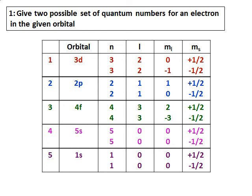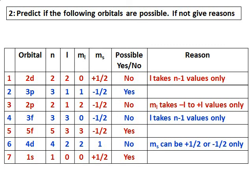Here is a practice question: give two possible sets of quantum numbers for an electron in the given orbital. The orbital values are given, and you need to find the values of n, l, ml, and ms. Since two sets are asked for, you can show variation in ml or ms. These are not the only answers — for 4f, for example, there can be more answers than what is given. This is just an example of how to write the different quantum numbers and their limitations.